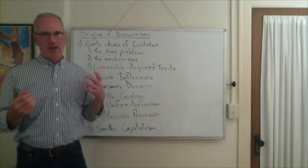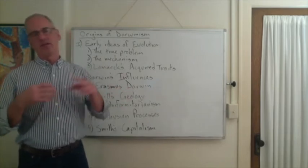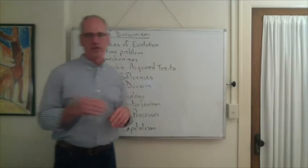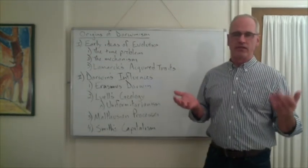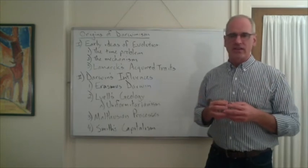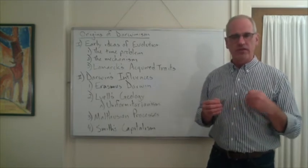Malthus was a pessimist. He was disgusted by all the optimism of the Enlightenment saying science is going to fix everything and human life will be wonderful. Malthus is like, no, that's not how it's going to work.